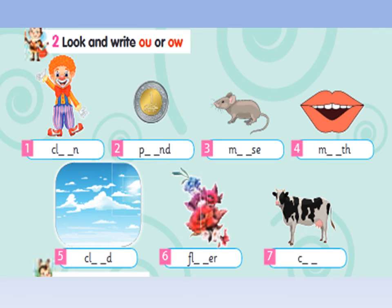Now look and write OU or OW. Number one: What is it? It's clown, OW. Yes, very good. Number two: What is it? It's pound, OU. Number three: What is it? Mouse, yes. Number four: Mouth. Number five: What is it? It's cloud, OU. Number six: Flower. Number seven, the last one: Cow. Very good.